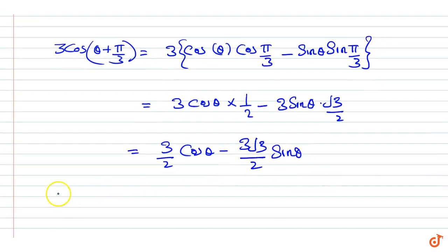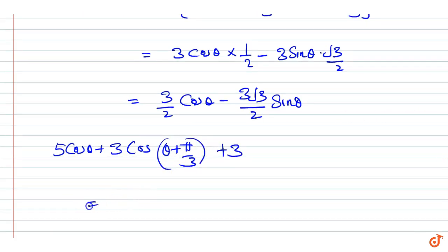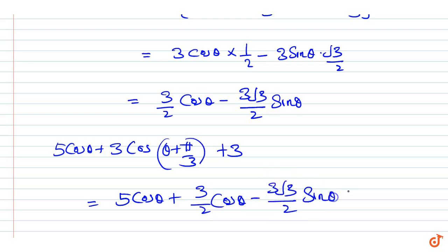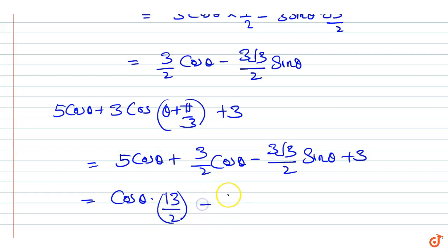Now the given expression 5cosθ + 3cos(θ + π/3) + 3 equals 5cosθ + 3/2·cosθ minus 3√3/2·sinθ + 3, which is equal to 13/2·cosθ minus 3√3/2·sinθ + 3.